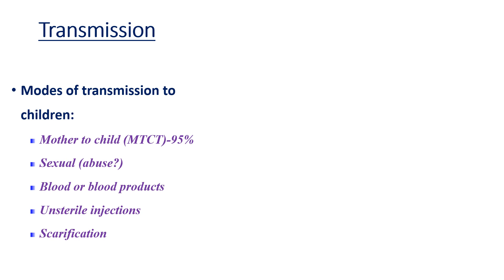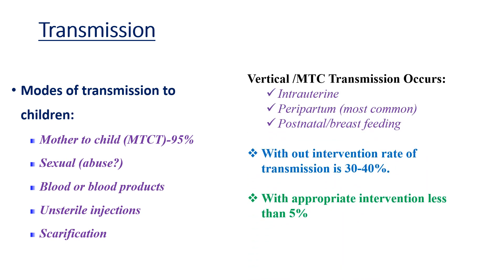The main mode of HIV transmission to children is mother-to-child, which is responsible for more than 95%. Less than 5% may be due to sexual abuse, blood or blood product transmission, sterile injection, and scarification. Vertical or mother-to-child transmission occurs during pregnancy, during labor and delivery, and postnatally via breastfeeding. Without intervention, the rate of transmission is around 30–40%; with appropriate intervention, the chance of mother-to-child transmission is less than 5%.